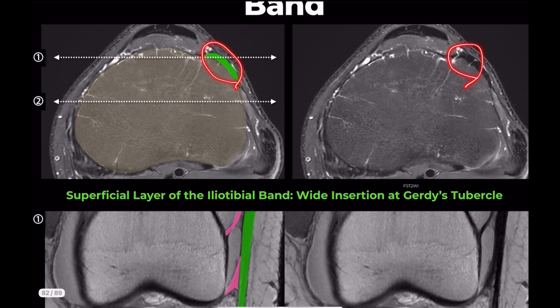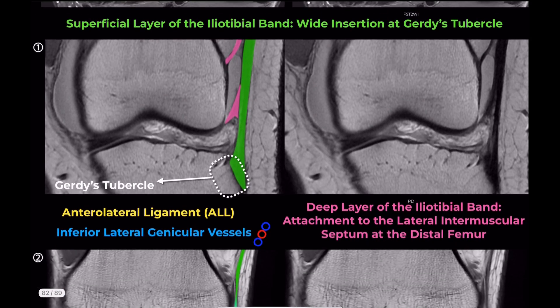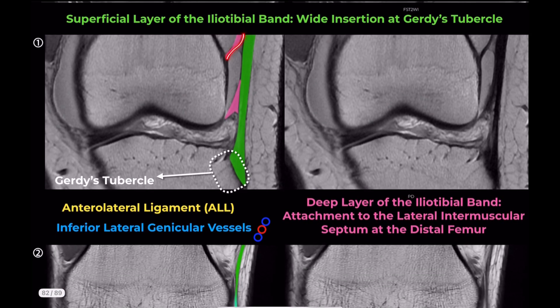The deep layer, marked in pink, connects the superficial layer to the lateral supracondylar tubercle of the femur.